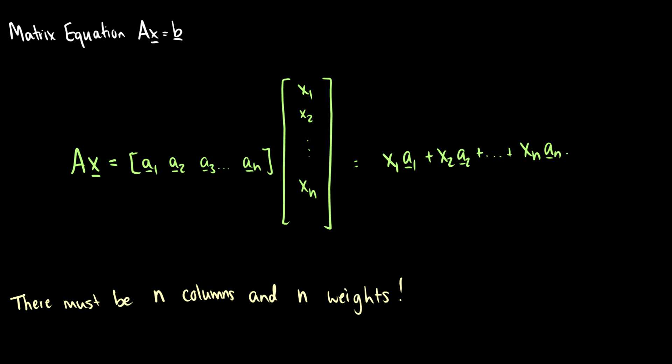In this video we're going to look at the matrix vector equation Ax is equal to b. So that's some matrix times a vector is equal to another vector. So what is a matrix times a vector?